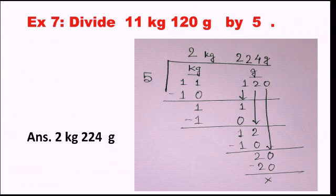Let's discuss question seven: divide 11 kg 120 gram by 5. The amount is already in kg and gram, so make two columns. Write 11 under kg and 120 under gram. Now divide: 5 into 10 gives 2, remainder 1; bring down to get 11, 5 into 10 gives 2, remainder 1; bring 1 from gram side, 5 into 12 gives 2, remainder 2; 5 into 20 gives 4. The answer is 2 kg 224 gram.